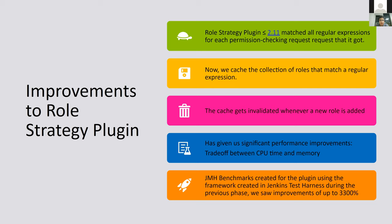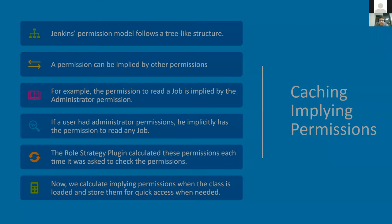We'll now discuss improvements to the Role Strategy plugin. The first major improvement was to avoid matching regular expressions again and again. Before version 2.11, Role Strategy plugin used to match all regular expressions for a given role type on every permission-checking request. To improve performance, we now cache the collection of roles that match a given regular expression, and we handle cache invalidation whenever a new role is added or modified. This gave a performance improvement shown by benchmarks of about 3,300 percent.